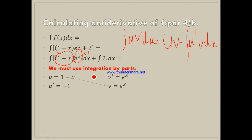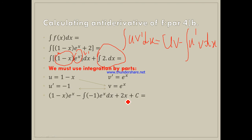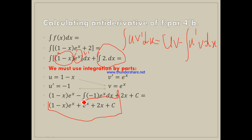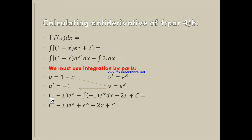Now we do u·v minus the integral of u′·v. So u times v is (1 − x)eˣ, minus the integral of (−1)·eˣ dx. The minus times minus gives plus; the integral of eˣ is eˣ. So adding the 2x term, we have the antiderivative of f(x).